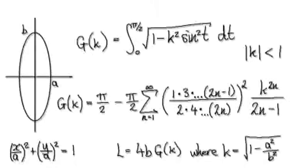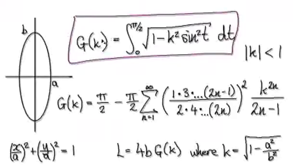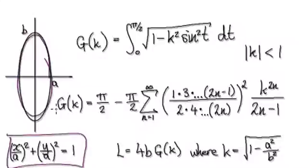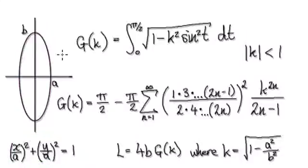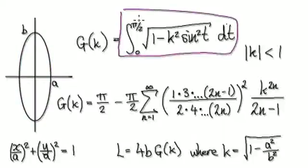In this video, we're going to look at this special function known as the elliptic function of the second kind. Suppose you have an ellipse given by this. There's no explicit formula for the arc length of this ellipse, so we would need to look at this function.